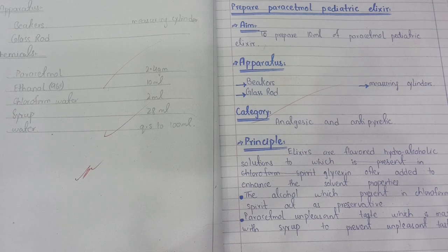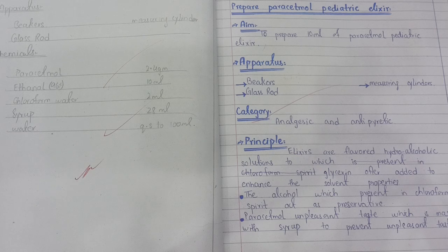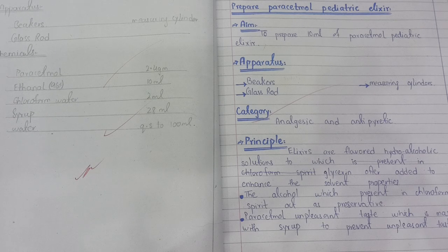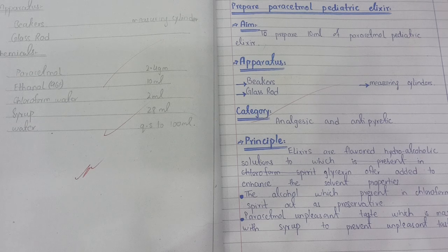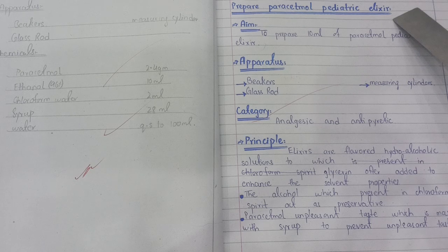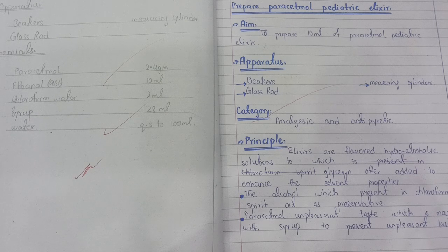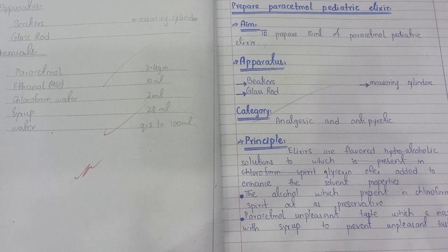This is experiment number five, in which we have to prepare an elixir. In the previous experiment, which is experiment number four, we prepared a piperazine citrate elixir, which is used to treat infections caused by worms and parasites — it is an anti-helminthic. Now we have to prepare another elixir, which is paracetamol pediatric elixir. The preparation is similar; the difference is only the active ingredient, which is paracetamol.